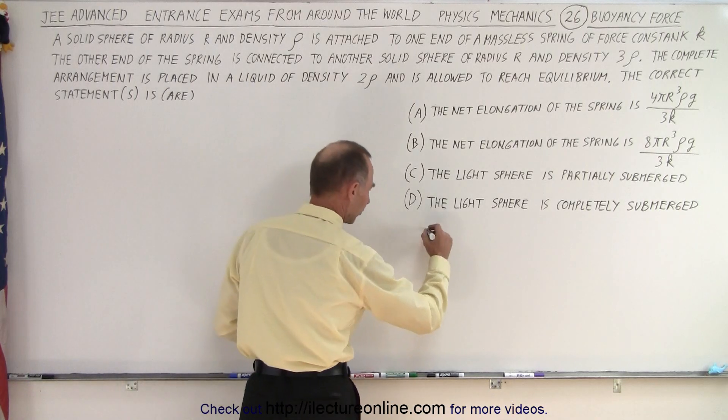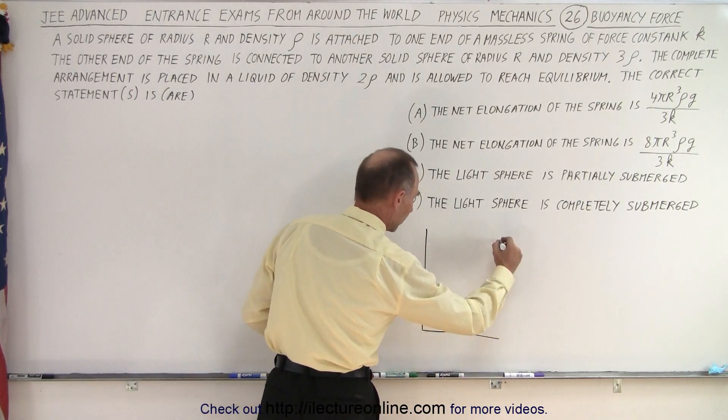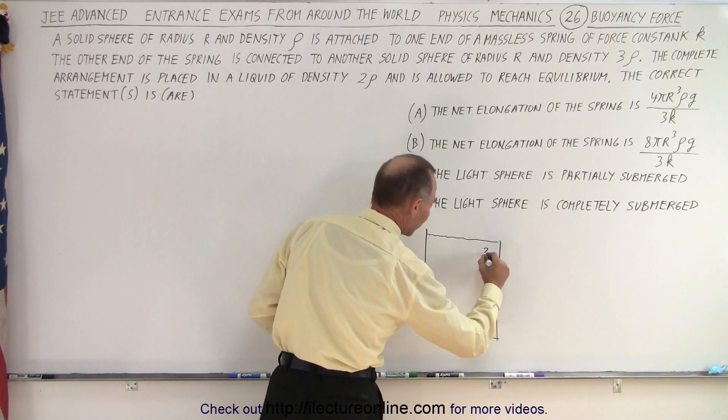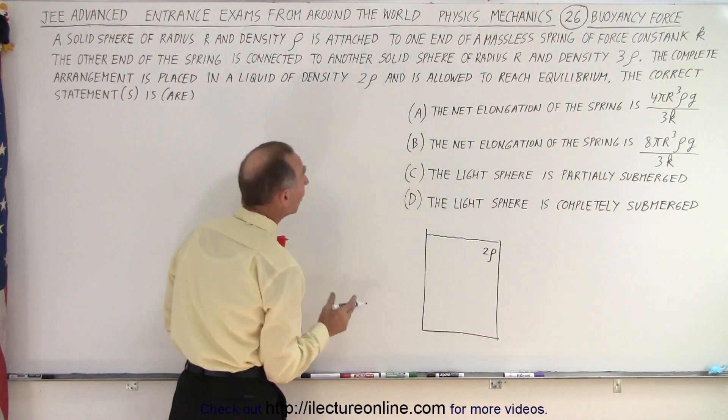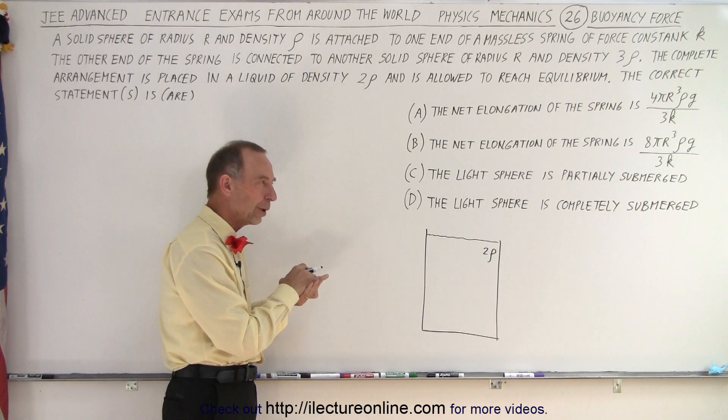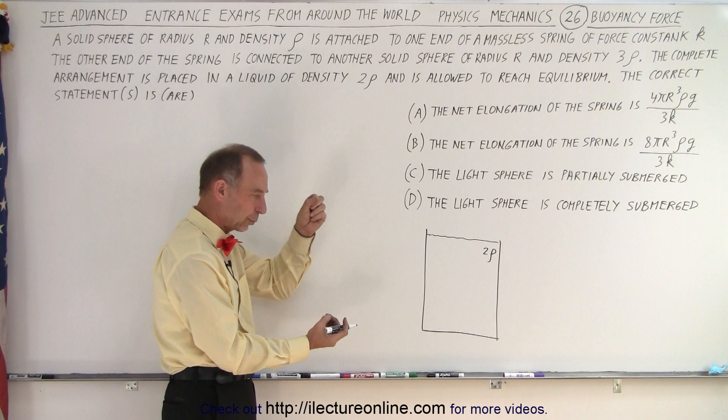So let's think about that. Let's have a container large enough to place in it that contraption. So it's filled with a liquid that has density 2 rho and now we have two spheres. One that has density 3 rho and one that has density rho. They're connected together with a spring.